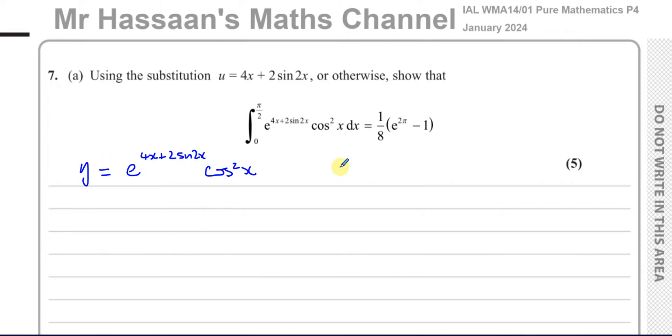I'm integrating using the substitution u equals 4x plus 2 sine of 2x. You'll notice that is the power of e here. Our objective is to integrate y with respect to x with the limits of x between 0 and pi over 2.